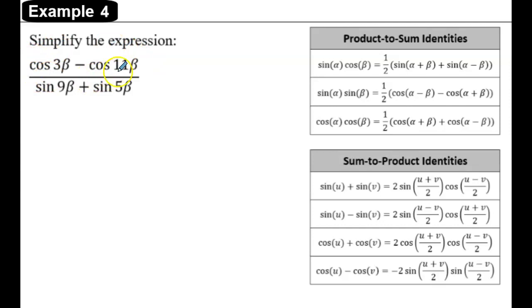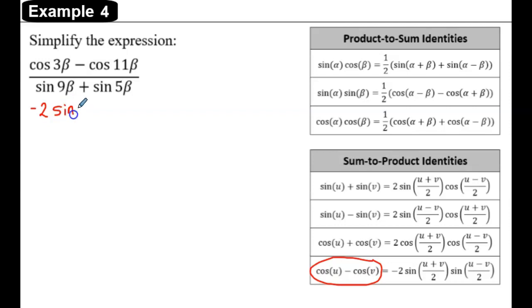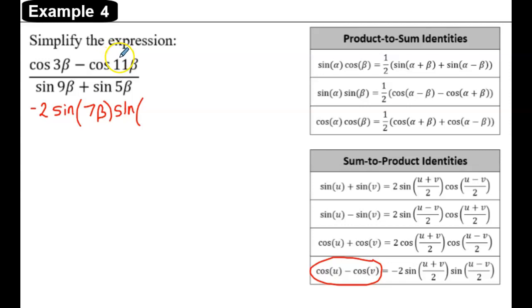The numerator is a difference of cosines of two different angles, so we're going to use the sum-to-product identity that subtracts cosines. That numerator becomes negative 2 times the sine of the sum of the angles divided by 2 — so 3 beta plus 11 beta is 14 beta divided by 2, which is 7 beta — times the sine of the difference of the angles divided by 2, so 3 minus 11 is negative 8 divided by 2, giving negative 4 beta.